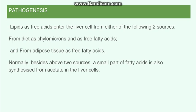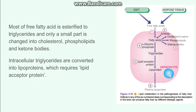Now going to the pathogenesis, firstly we have to understand the normal lipid metabolism in the liver. The free fatty acids are mainly derived either from the diet of the person or from the adipose tissue. These free fatty acids enter into the hepatocytes, and can also be derived from acetate. The free fatty acids are majorly converted into triglycerides with the help of alpha glycerophosphate.